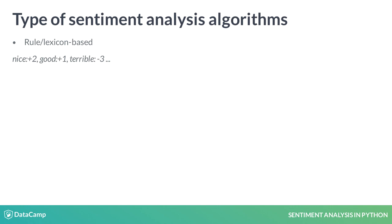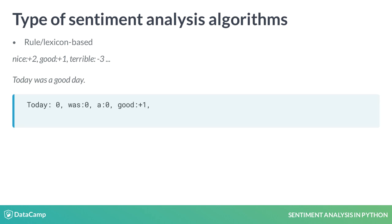As an example, let's take the sentence 'today was a good day.' Each word gets a score, and to get the total valence we sum the words. In this case, we have a positive sentence.